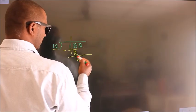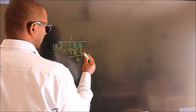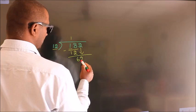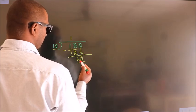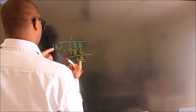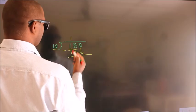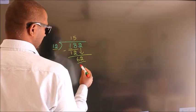After this, bring down the next number. So 2 down. So 62. A number close to 62 in the 12 table is 12 fives, 60.